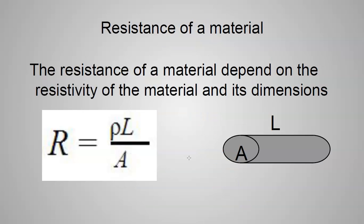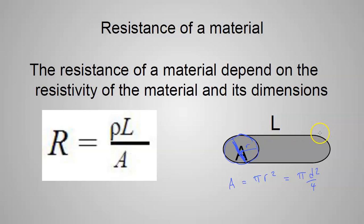To calculate the resistance of a piece of wire: the resistance R equals resistivity ρ times length L divided by cross-sectional area A. The cross-sectional area is found with πr² or πd²/4. The longer the wire, the more resistance. They'll give you three of the four values and you calculate the fourth.